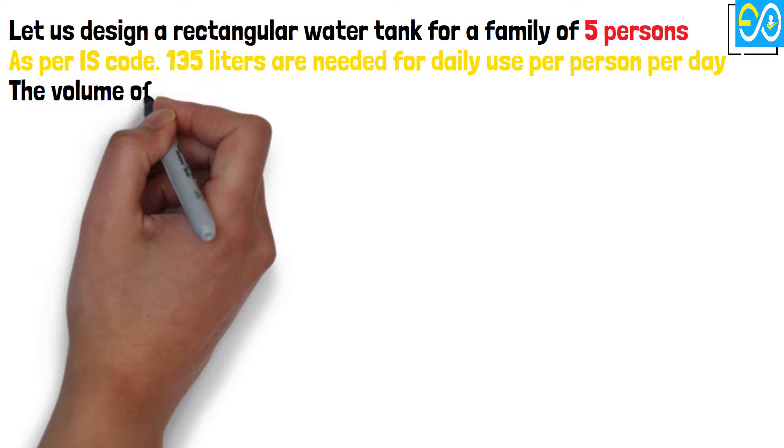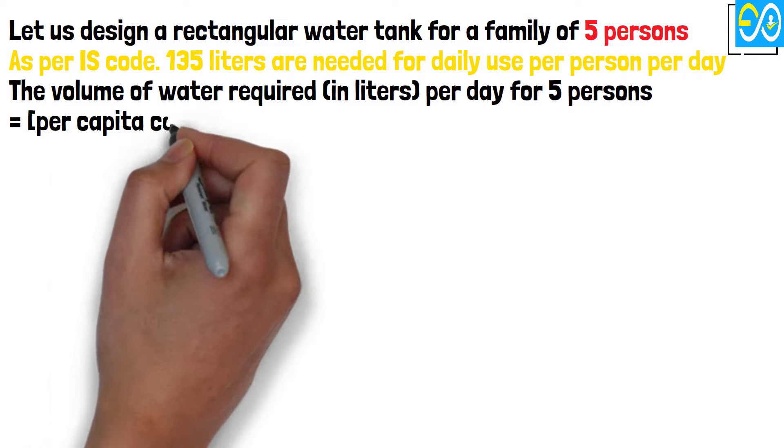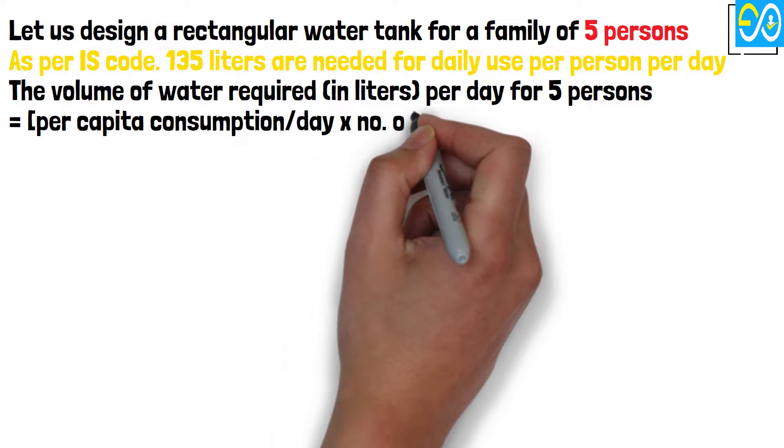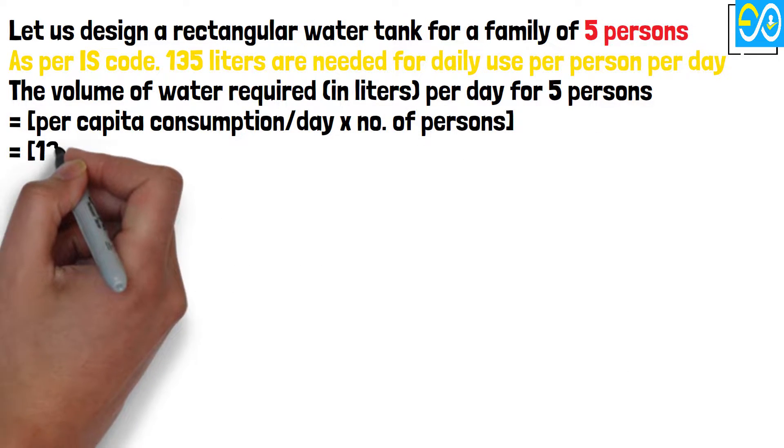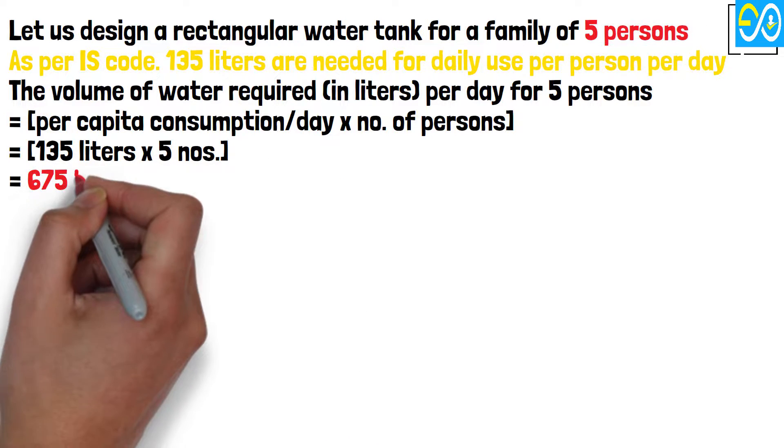The volume of water required in liters per day for 5 persons equals per capita consumption per day times number of persons, which equals 135 times 5, equals 675 liters.